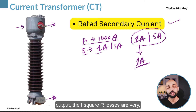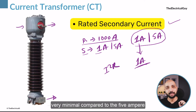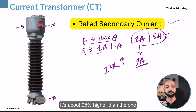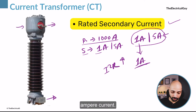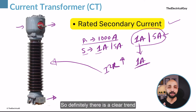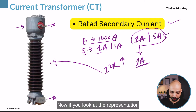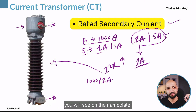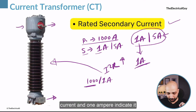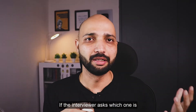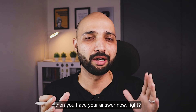There is a clear trend towards 1 ampere secondary current. When you use 1 ampere as a secondary output, the I²R losses are very minimal compared to 5 ampere. With 5 ampere, the I²R losses are about 25 times higher — that additional burden on the CT makes it heavier and more costly. The nameplate representation is generally shown as 1000/1 A, where 1000 indicates the primary current and 1 ampere indicates the secondary current.